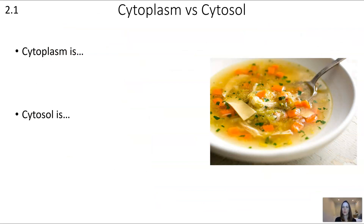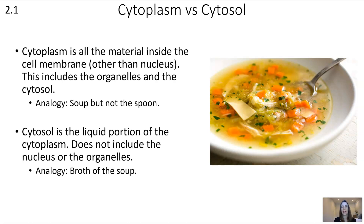Let's go over two terms that are easy to mix up: cytoplasm and cytosol. Cytoplasm is all of the material inside the cell membrane other than the nucleus, and that includes the organelles. Cytosol is the liquid part of the cytoplasm, so that doesn't include the nucleus or the organelles. Think of cytoplasm as the whole soup — broth, chicken, noodles, and veggies — whereas cytosol is just the broth.